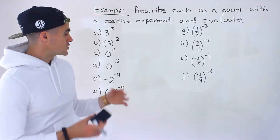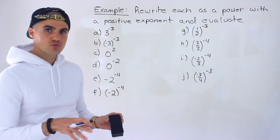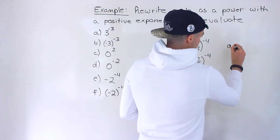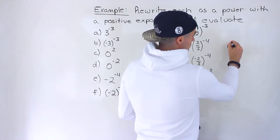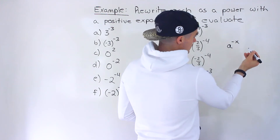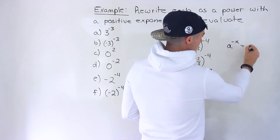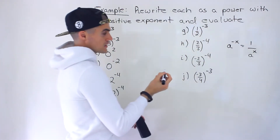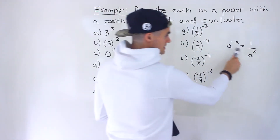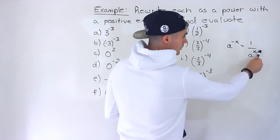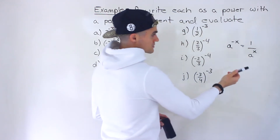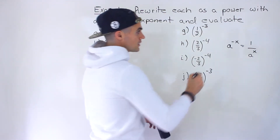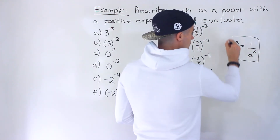In general, the first big rule we're going to use is: if we have something like a to the negative x, we can rewrite this as 1 over a to the power of positive x. These two are the same — you just bring the exponent down into the denominator, and then you have a positive exponent.